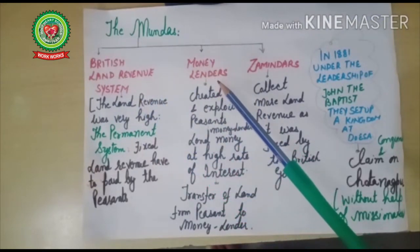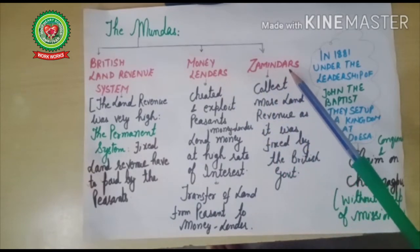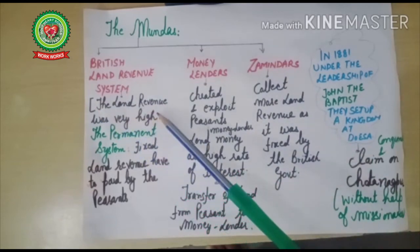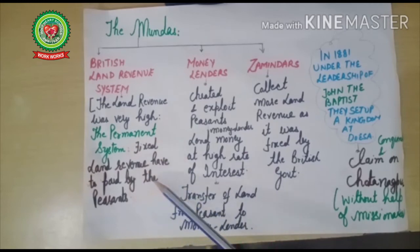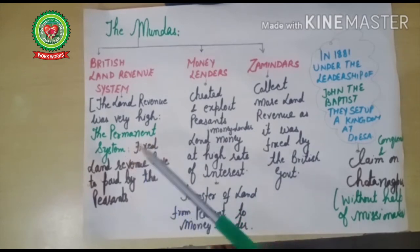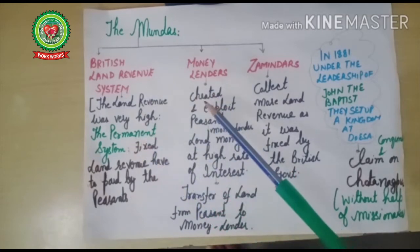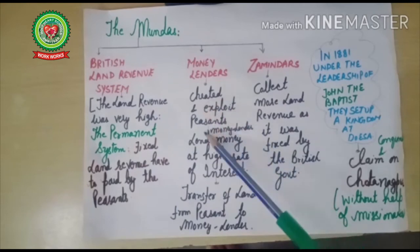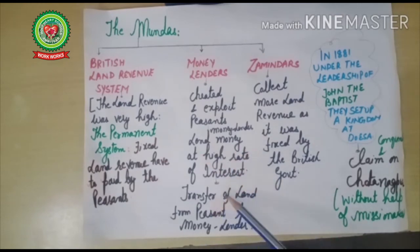The Mundas were not happy with the British land revenue system, the exploitation by money lenders, or the treatment by zamindars. The land revenue was very high under the Permanent Settlement in Bihar, requiring peasants to pay a fixed amount. If they could not pay, they could not work their land. Money lenders exploited this by lending at very high interest rates, resulting in transfer of land from peasants to money lenders.